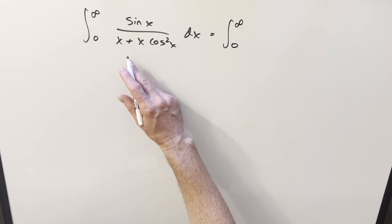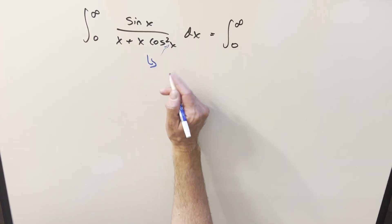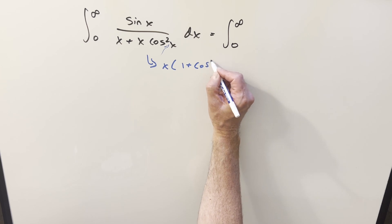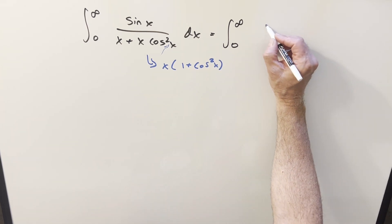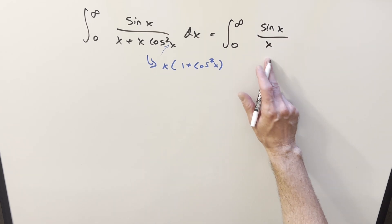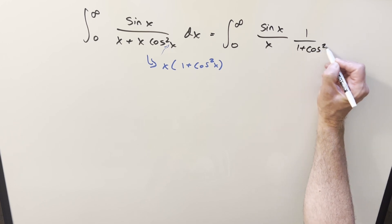What we can do is if I factor out an x in the numerator, this becomes x times 1 plus cosine squared x. So putting it in that form and trying to make it clear, I separate out the x and I'll write it like this. So we just have our sine x over x, and then the other part we'll write as 1 over 1 plus cosine squared x.